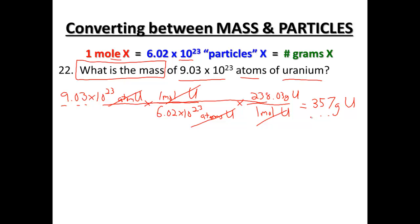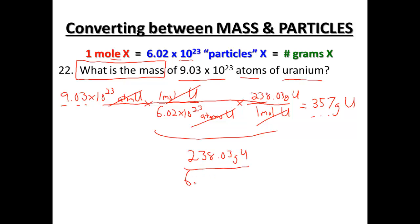Round to 3 significant figures for your uranium answer. If you'd like to, you could combine this second step: 238.03 grams of uranium over 6.02 times 10 to the 23rd atoms of uranium — condensing the two steps into just one step.